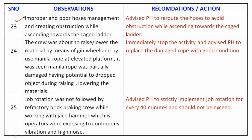Observation 23: Improper and poor hose management is creating an obstruction while ascending the caged ladder. Recommendation: Advise the permit holder to redo the hoses to avoid obstruction while ascending towards the caged ladder.